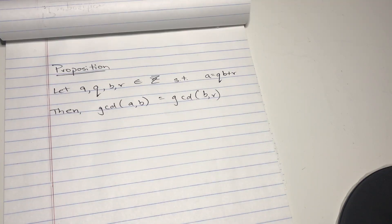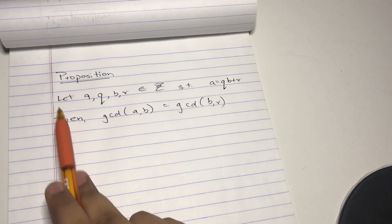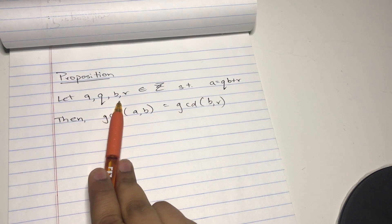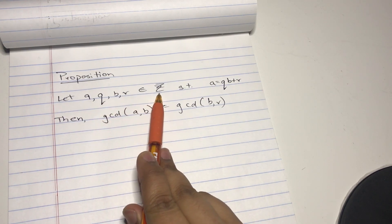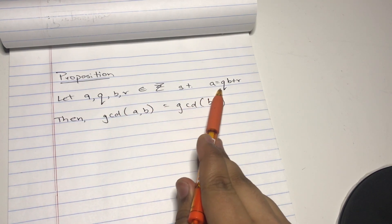Hello and welcome everybody, thank you for visiting my channel, just a guy who likes math. Today I'm going to prove the proposition: let a, q, b, and r belonging to integers such that a equals qb plus r.